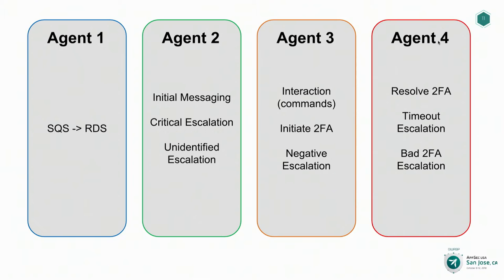Agent two is where things get more interesting. That's where we make the initial call out to a user, ask them if this was them, and get that initial request. We also have a couple of escalations that can happen at that stage. For example, if the alert is something we consider very high priority and we want the security team to know about right away, we'll escalate it at this time. Additionally, sometimes our alerting system feeds in alerts not associated with a user that exists in Slack, or there's a mismatch between LDAP and Slack credentials — those would also get escalated in agent two.